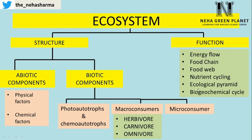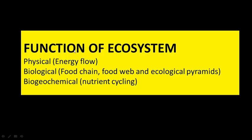Ecosystem is also represented by function. In function we have energy flow, food chain, food web, nutrient cycling, ecological pyramids, and biogeochemical cycle. The functional features are basically those processes which help in interlinking living organisms — that means biotic components — with the abiotic components. Functional features of ecosystem include physical functions like energy flow, biological functions like food chain and food web and ecological pyramids, and biogeochemical functions like nutrient cycling.